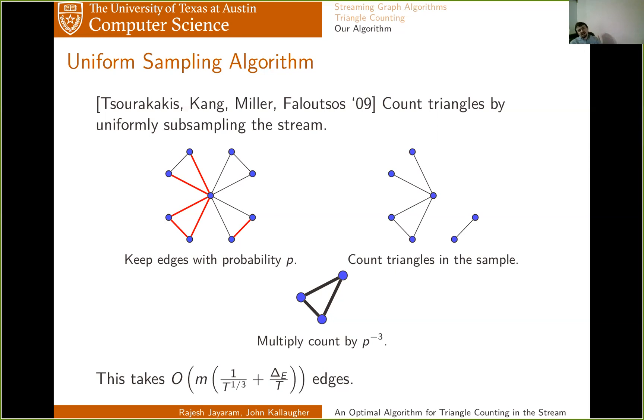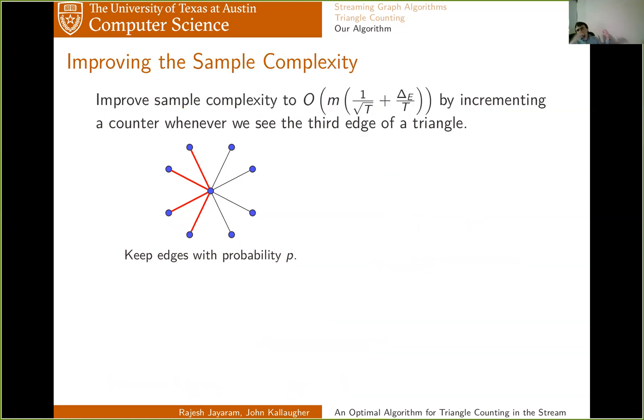So how can we improve on this one over T to the one-third term? Well, the first thing we could try is observing that when we're looking at this stream of edges, each triangle will have its three edges arrive in some order. Suppose that we've sampled the first two edges of a triangle. Well then, when we see its third edge, regardless of whether the coin that we're flipping to decide whether we keep edges tells us to keep it or not, we can already say, okay, I see that this closes a triangle, and so I'll add one to my count of how many triangles I've seen. Now, your chance of counting any given triangle is P squared, so you multiply the count by P minus two, and this means that now this one over T to the one-third term becomes a one over square root T term.